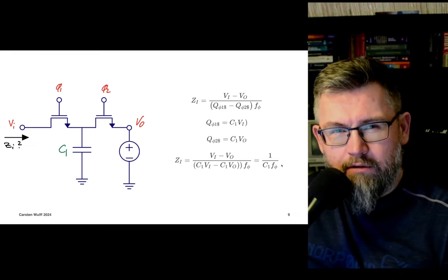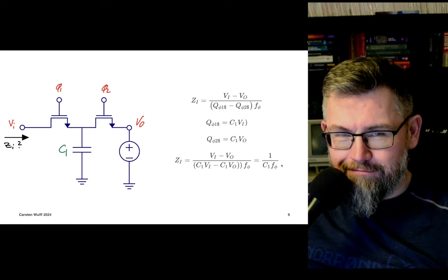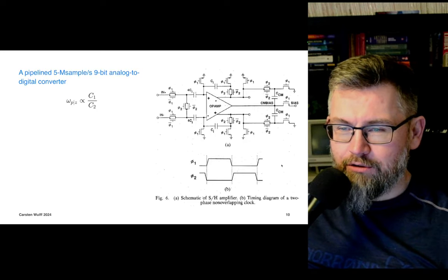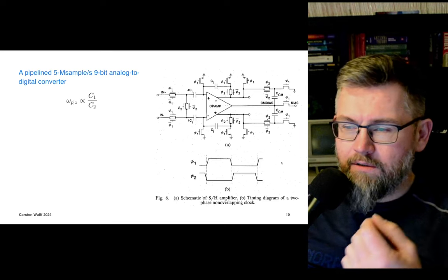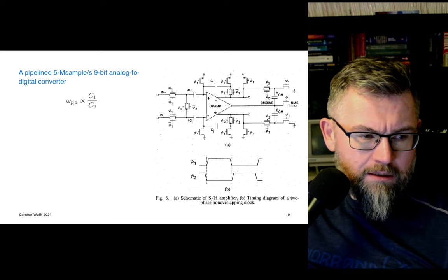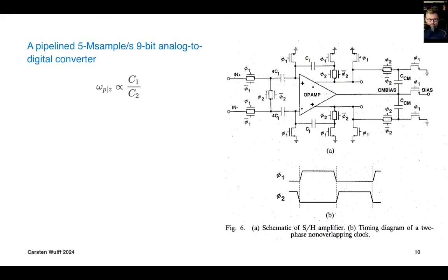That's the concept of switch capacitor circuits. People really like using this to generate accurate gain — accurate gain and accurate pole-zero frequencies. The circuit on the right is from a fairly old pipeline ADC paper, showing the input buffer. We have the differential input voltage given by IN+ and IN−, switches (transmission gates — PMOS and NMOS), a second transmission gate, and a couple of capacitors.